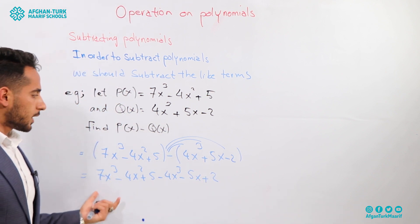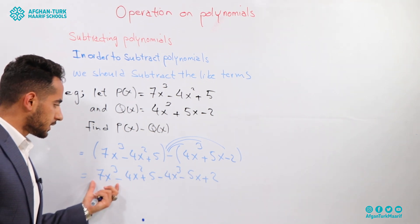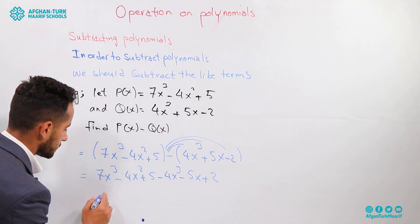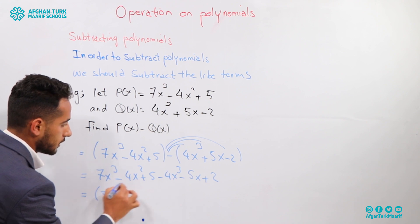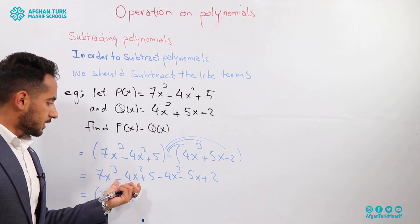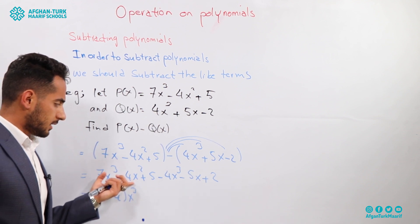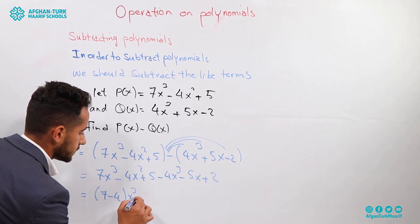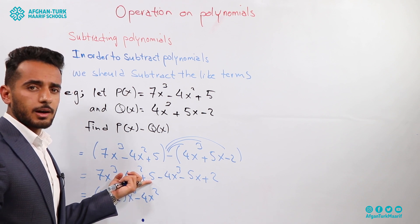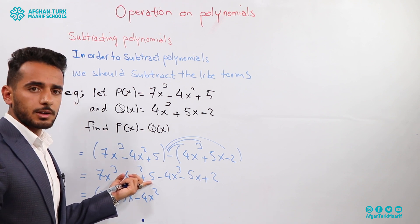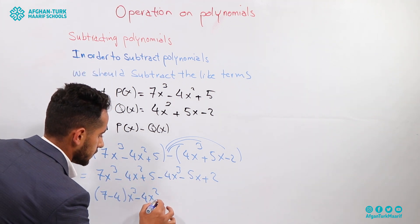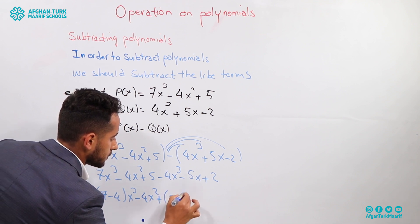Now we subtract the like terms. We have 7x to the power of 3 and 4x to the power of 3 — the degrees are the same, so we subtract: 7 minus 4 equals 3, giving 3x to the power of 3. For the second degree, there is no other term, so we write minus 4x squared itself. The constant term is 5, and we also have plus 2, so 5 plus 2 equals 7.